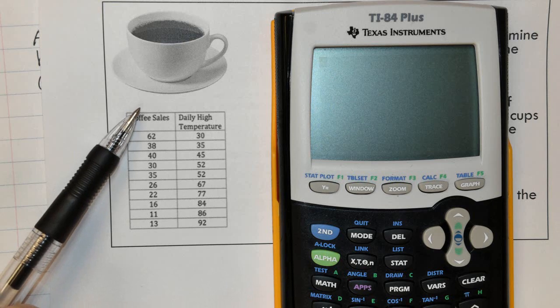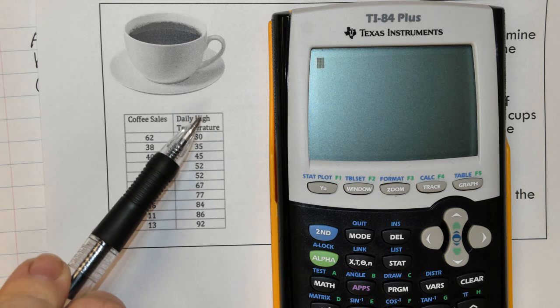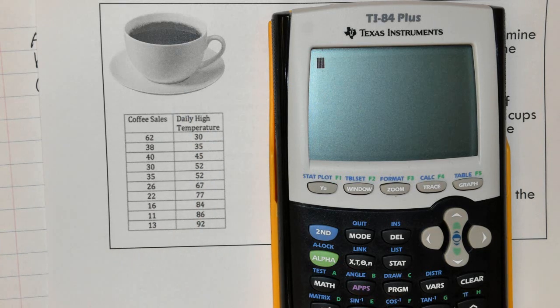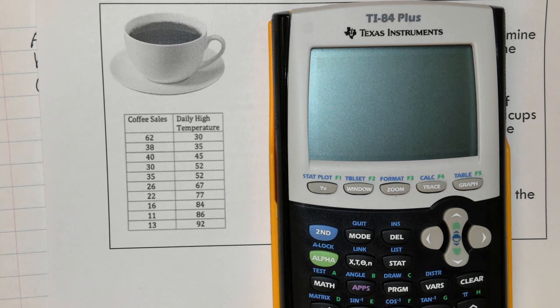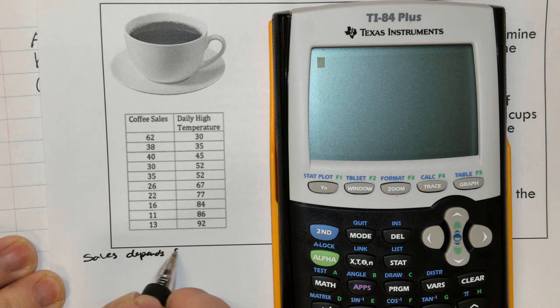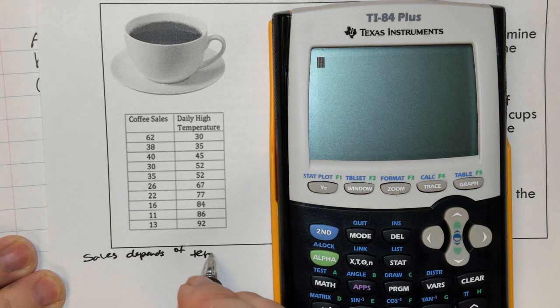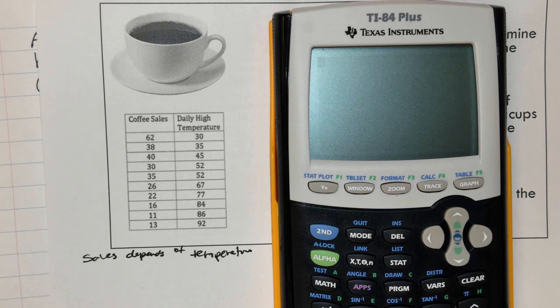This discusses the number of coffee sales and how it relates to the high temperature of the day. We make two statements and you decide which one do you believe is correct. Coffee sales depend on temperature or temperature depends on coffee sales? The correct answer is coffee sales depends on temperature. Now what is the reason we do that? That helps us determine what is the X and what is the Y.